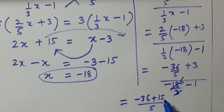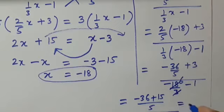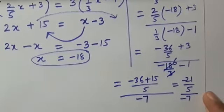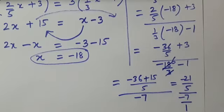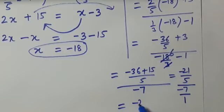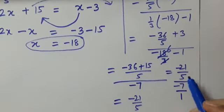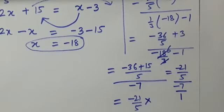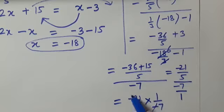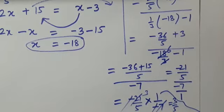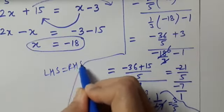Now minus 36 plus 15 equals minus 21. So we have minus 21 upon 5 divided by minus 7 upon 1. Changing division to multiplication, minus 7 upon 1 becomes 1 upon minus 7. The minus signs cancel, 7 threes are 21, and we are left with 3 upon 5. This equals our right hand side, so LHS equals RHS — hence verified.